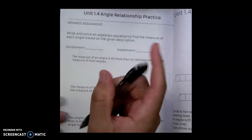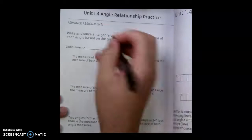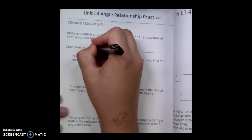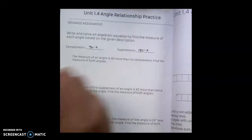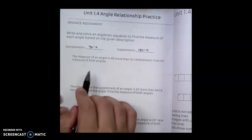Okay, we're doing the advanced part of 1.4. First off, some vocab. The complement is going to be 90 minus x. The supplement is going to be 180 minus x. Okay, this will help us with the following problem.